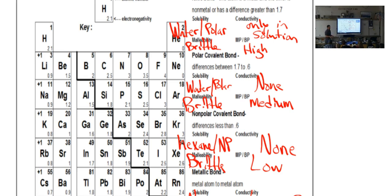Double-check your work here. So, for ionic, it's water-slash-polar, only in solution, brittle and high.